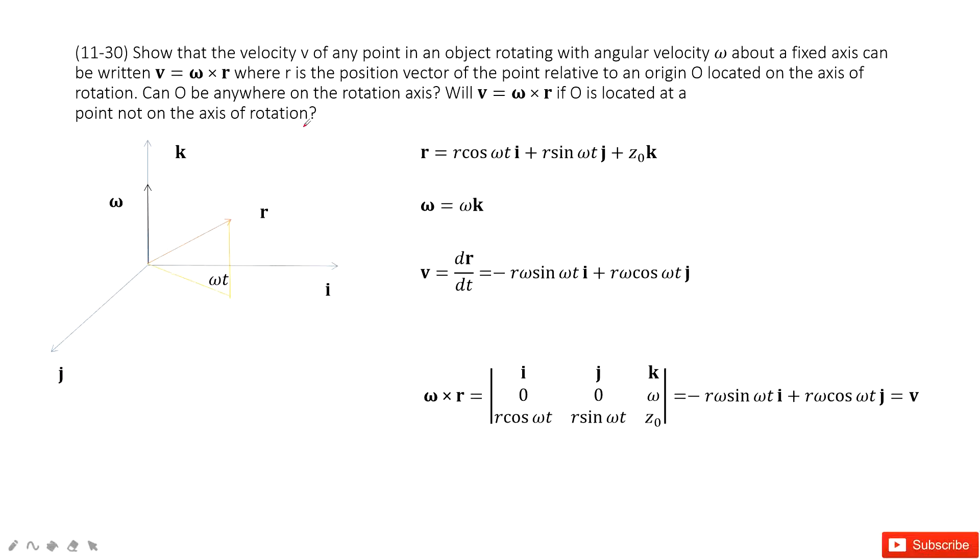Welcome to my channel. I'm Zhang Jingxu. Let's look at problem 30 in chapter 11. Chapter 11 is about angular momentum. So we need to prove this equation: V equals ω cross R. So how can we do that?